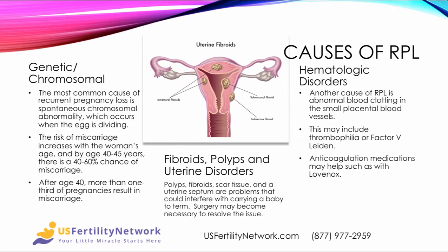The most common cause by far for recurrent pregnancy loss is genetic or chromosomal abnormality. This occurs when the egg is dividing and the risk increases with the woman's age. By age 40 to 45 years, there's a 40 to 60% chance of a miscarriage, and after age 40, more than a third of pregnancies result in a miscarriage.